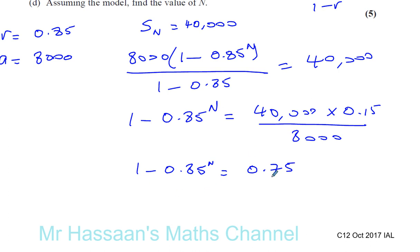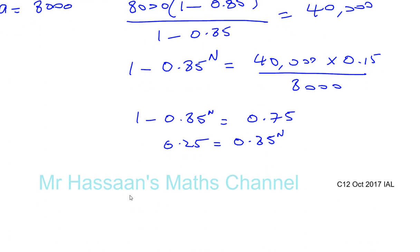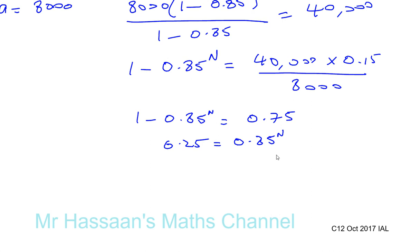So 1 minus 0.75 gives me 0.25 equals 0.85 to the power of N. To solve this exponential equation, I'll take log to the base 10 of both sides. I'll have log of 0.25 equals N times log of 0.85.